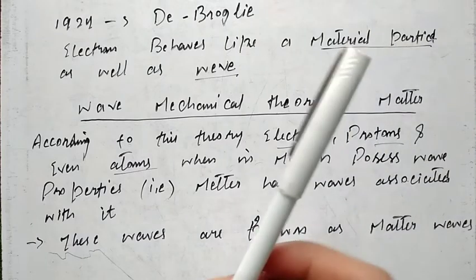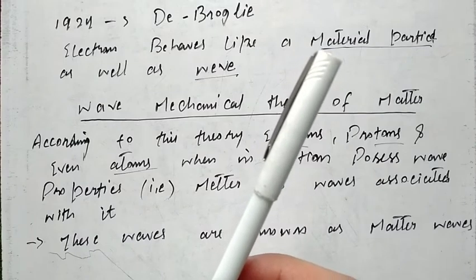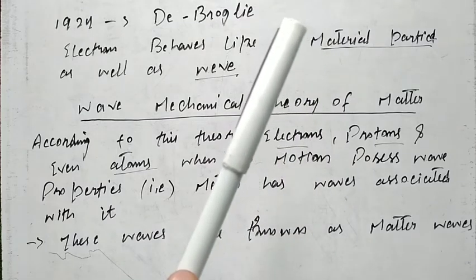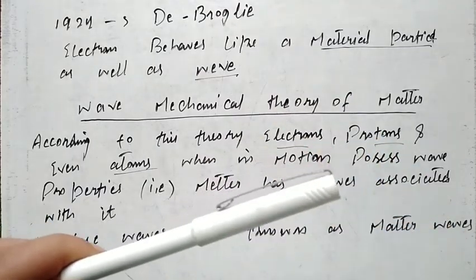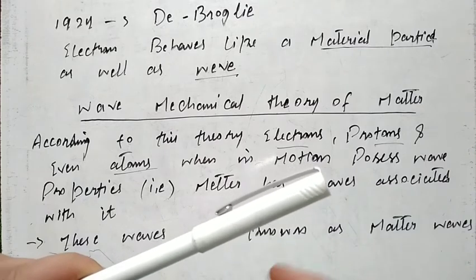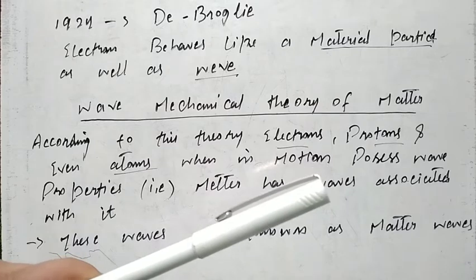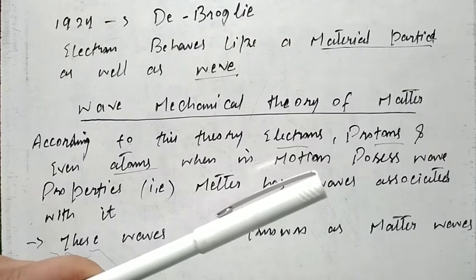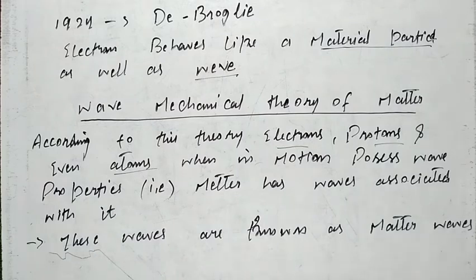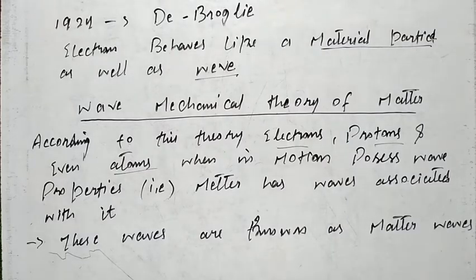For example, if I throw this pen, it will attain a certain velocity. When this pen is in motion, it will be associated with waves — those waves will surround this pen. We call these matter waves. Matter waves are different from mechanical waves or electromagnetic waves; they are a third type of wave, arising simply due to the motion of matter.